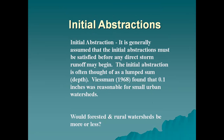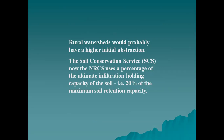Initial abstractions: it is generally assumed that initial abstractions must be satisfied before any direct storm runoff may begin. The initial abstraction is often thought of as a lump sum depth. Bissin in 1968 found that 0.1 inches were reasonable for small urban watersheds. Rural and forested watersheds would probably have a higher initial abstraction. The NRCS uses a percentage of the ultimate infiltration holding capacity of the soil — that is 20% of the maximum soil retention capacity.